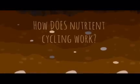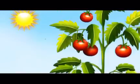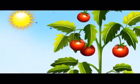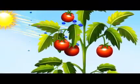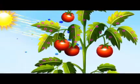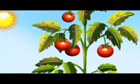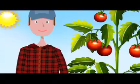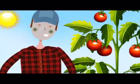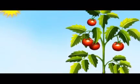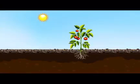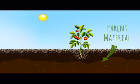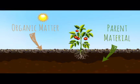How does nutrient cycling work? During photosynthesis, plants combine carbon dioxide from the atmosphere and sunlight to produce simple sugars and carbohydrates. But just like humans, plants can't live on sugars and carbs alone. Fortunately for plants, there's a rich source of nutrients right under their feet in the soil parent material and in organic matter.